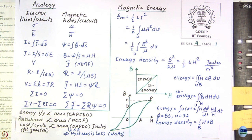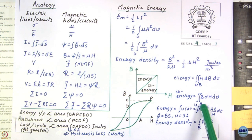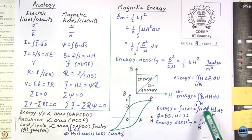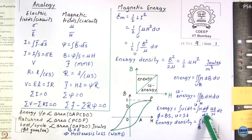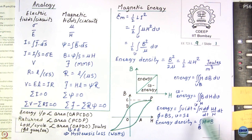Energy is ∫H dB integrated over volume, while coenergy is ∫B dH integrated over volume. To understand the physical significance: energy is ∫V·i dt, since V×i is power and power×time is energy. Expressing V as N·dψ/dt (Faraday's law) and i = H·L/N, then substituting ψ = B·area and volume = area × length, you get the energy density as ∫H dB.